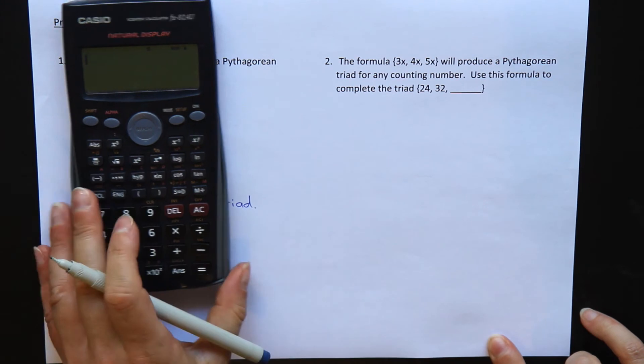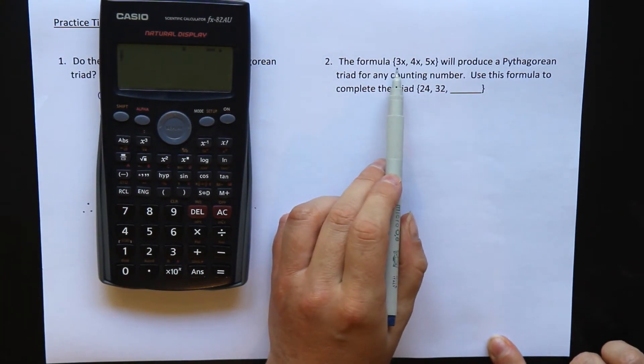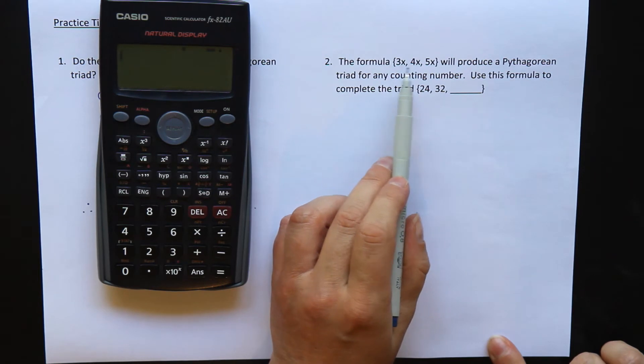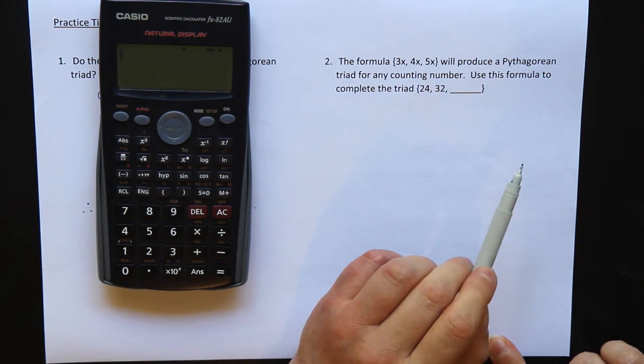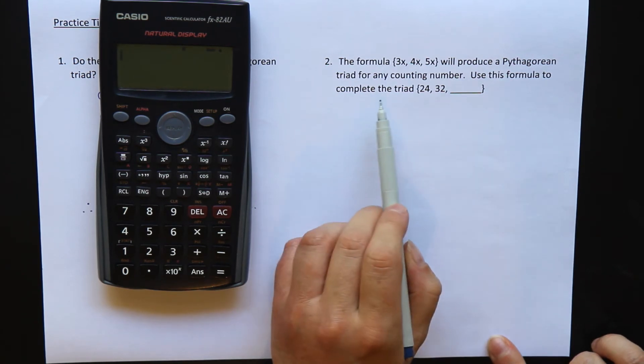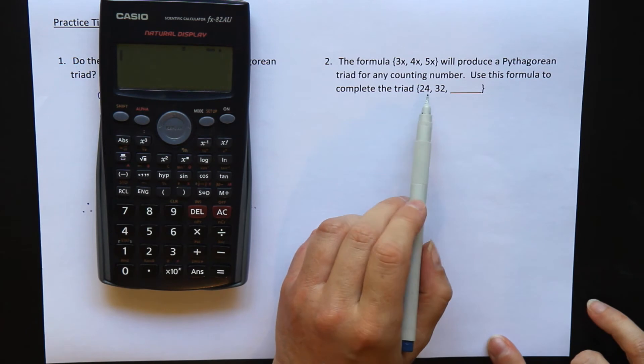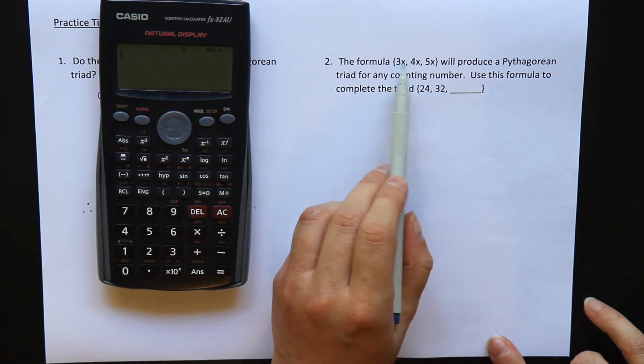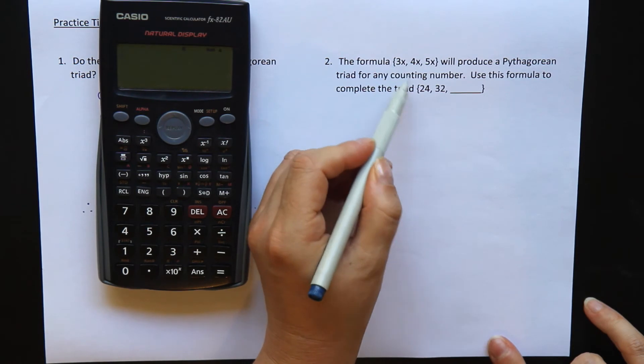Let's have a look at question 2. Here we have our formula again like in the practice. The formula 3x, 4x and 5x will produce a Pythagorean triad for any counting number. Use this formula to complete the triad, the third number here. So I can use either of these to find the third number. Let's just stick with the first one, the 3x.